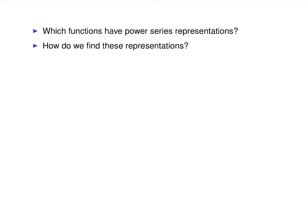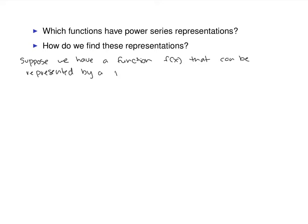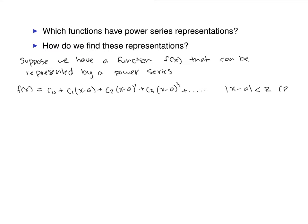Suppose we have a function f of x that can be represented by a power series — that means we can express f of x as c-naught plus c1 times x minus a to the first, plus c2 times x minus a squared, plus c3 times x minus a cubed, and so on, on some interval where the absolute value of x minus a is less than r, and we assume r is not equal to zero, so we have some non-zero radius of convergence.